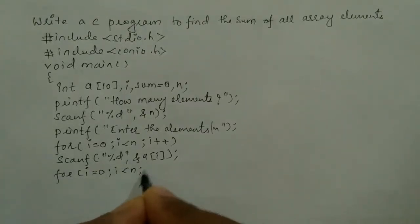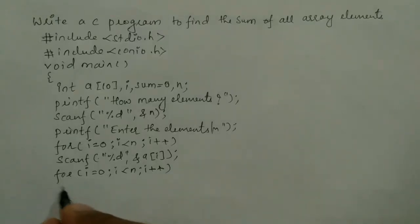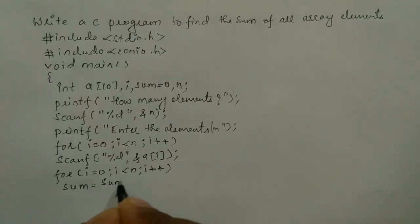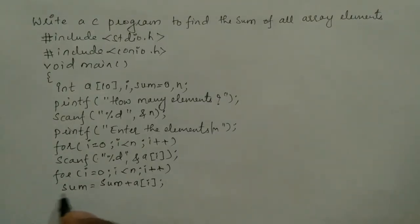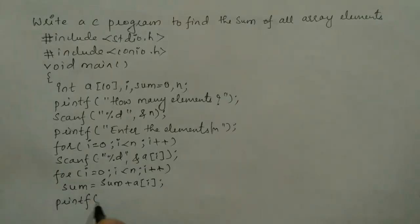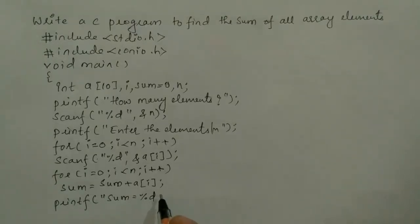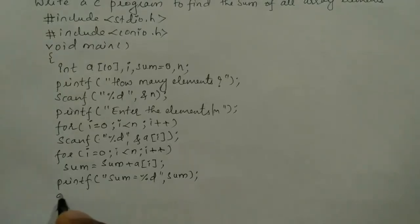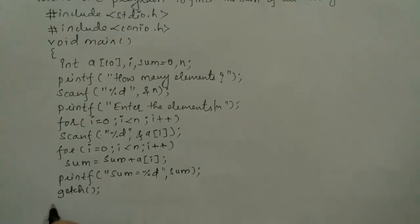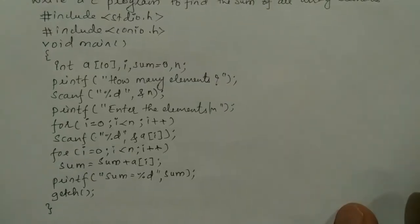Once again we use a for loop: for i equal to zero, i less than n, i plus plus. Inside we perform the sum: sum is equal to sum plus a of i, then semicolon. Now we print the value: printf with "sum = %d" comma sum, semicolon. Then we write the getch function and the closing curly brace.